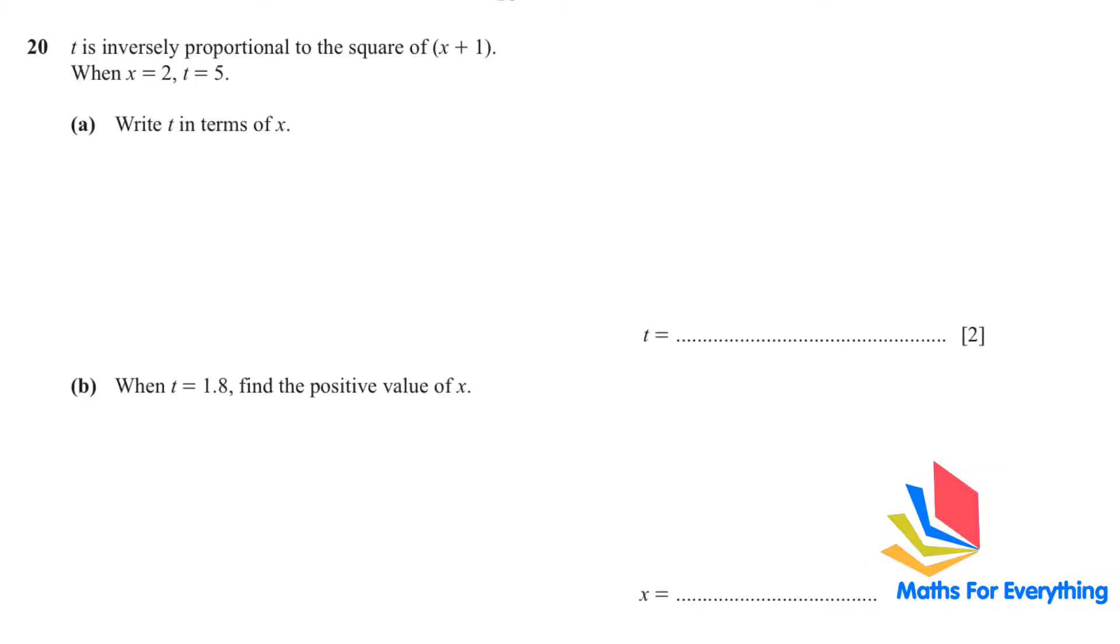Question number 20 is an inversely proportional question. T is inversely proportional to the square of x plus 1. So T is inversely proportional to the square of (x + 1). We square the whole thing and we have to find k. In questions like this, the first thing we have to do is find k.